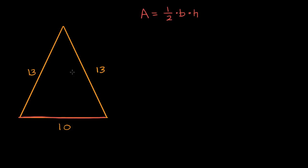But what is our height? Our height would be the length of this line right over here. If we can figure that out, then we can calculate what one half times the base 10 times the height is. But how do we figure out this height?